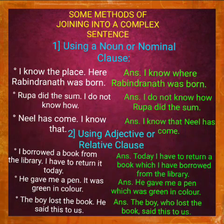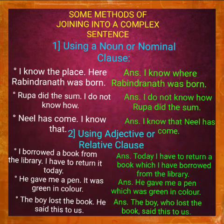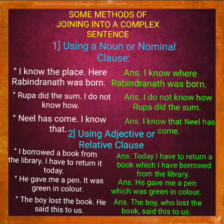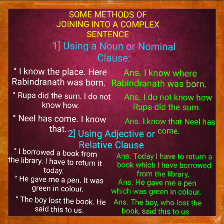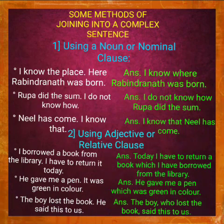Let me tell you some methods of joining sentences into a complex sentence by using different clauses. First method, number one: using a noun or nominal clause. Example — 'I know the place' and 'Robindranath was born here.' If I join them into a complex sentence using a noun clause, the answer will be: 'I know where Robindranath was born.' Here, 'I know' is the independent clause and 'where Robindranath was born' is the noun clause.